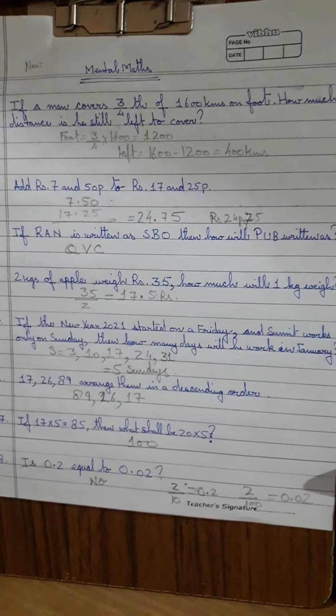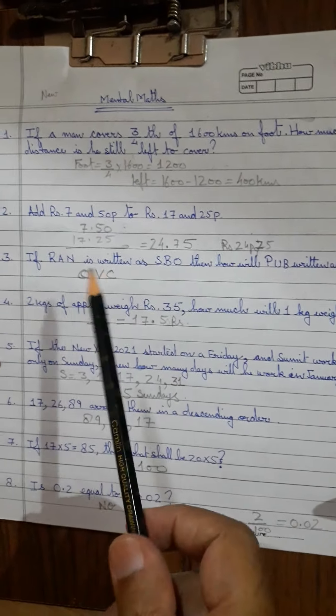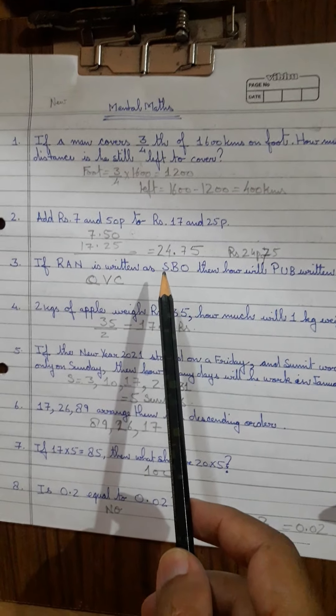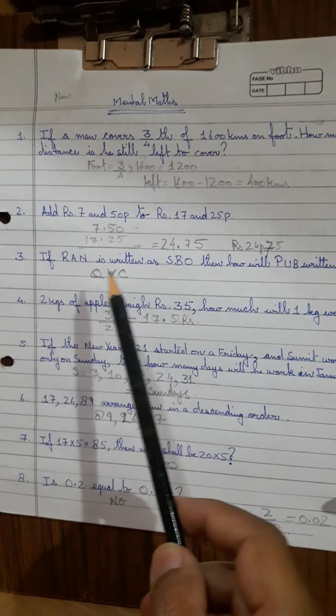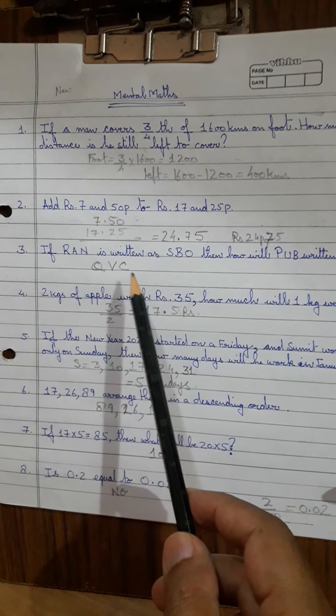Coming to the next one, RAN is written as SBO, then PUB will be written as QVC. Just go to the letter ahead: P, Q, U, V and B is C. Q, V, C is your answer.